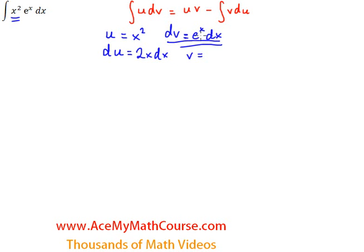We need to figure out what v is by integrating both sides. The integral of e to the x, as I mentioned before, is just e to the x. Now that we have du and v we can just fill everything into the formula here, so we have u times v, and the u is x squared, the v is e to the x, minus v times du, and du is just 2x dx.